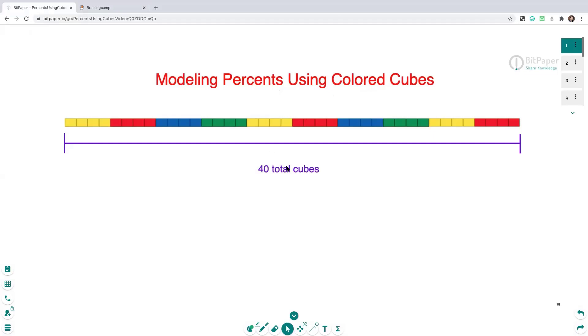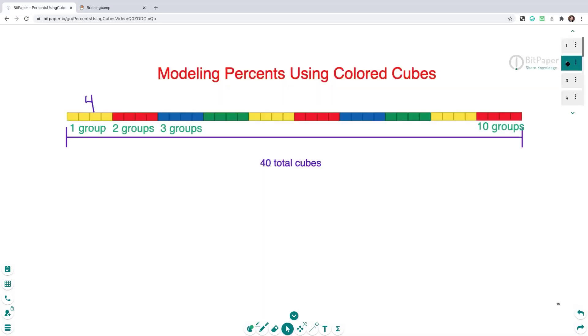So on my screen, I have 40 total cubes, and with my 40 total cubes, I have put them into groups of four. So you'll see I have one group of four, two groups of four are eight cubes, three groups of four are 12 cubes, and I'm counting by fours.